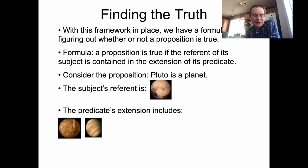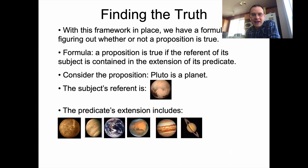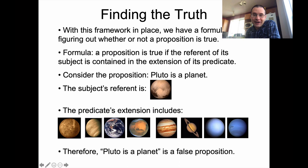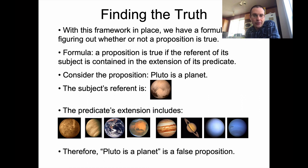We have pictures of what the other objects in space look like. And we find that if we look at that extension — that set of referents — we do not find Pluto in that extension. So sadly, saying Pluto is a planet is a false proposition because Pluto is no longer considered a planet. So there is a set of objects in the world that define the extension of a predicate, and if a referent happens not to be in this extension, you get a false proposition.